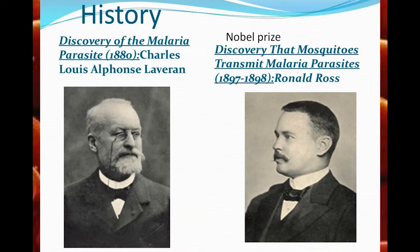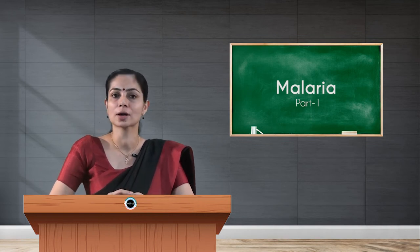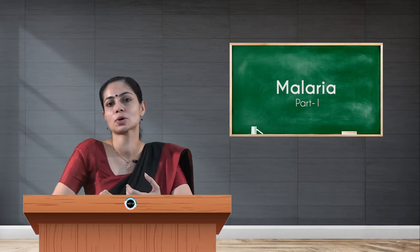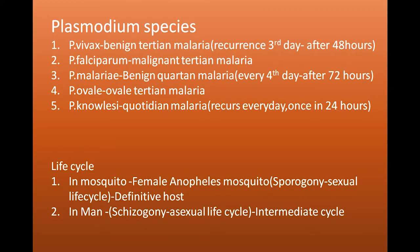Coming to the parasite plasmodium, we have five species: Plasmodium vivax, Plasmodium falciparum, Plasmodium malariae, Plasmodium ovale, and Plasmodium knowlesi. Plasmodium vivax and Plasmodium falciparum are the most common species and they lead to tertian type of malaria.